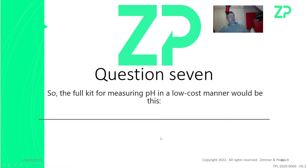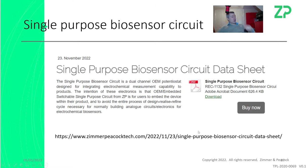Question seven: somebody's interested in measuring pH — low cost. One of the lowest-cost electronics options for pH measurement is our single-purpose biosensor board — there's a link here. If you can read and understand the datasheet, you are qualified to use it. If you don't understand it, that probably says the electronics team isn't ready to take on that board. So if you're going to engage with ZP and use our single-purpose biosensor circuit, you do need to read that datasheet.